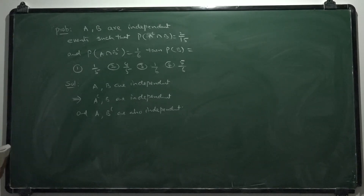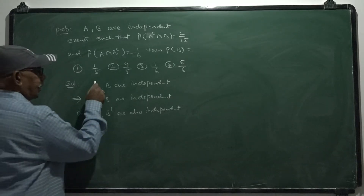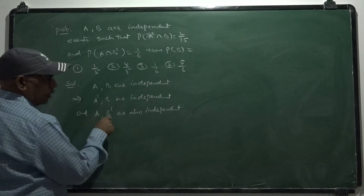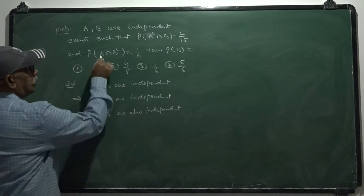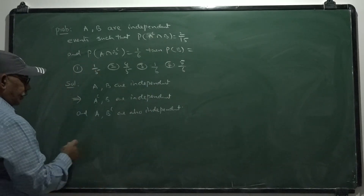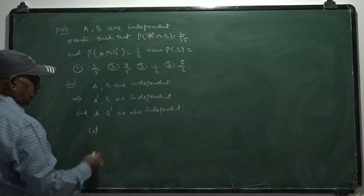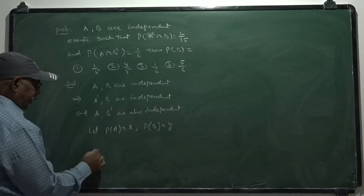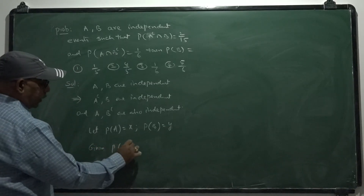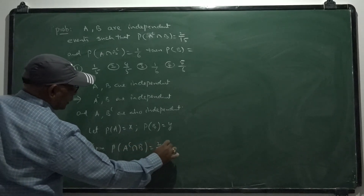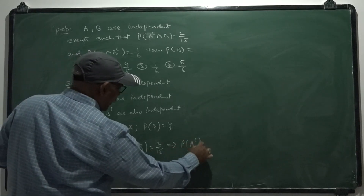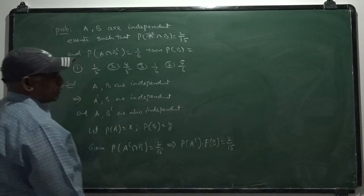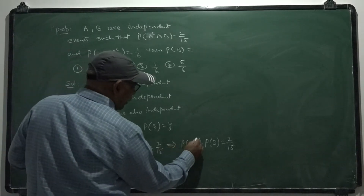Once A and B are independent, their complements are also independent: A complement and B complement are independent, A complement and B are independent, and A and B complement are also independent. Let P of A equal X and P of B equal Y. Given probability of A complement intersection B is 2 by 15 — since they are independent, this equals probability of A complement times probability of B.